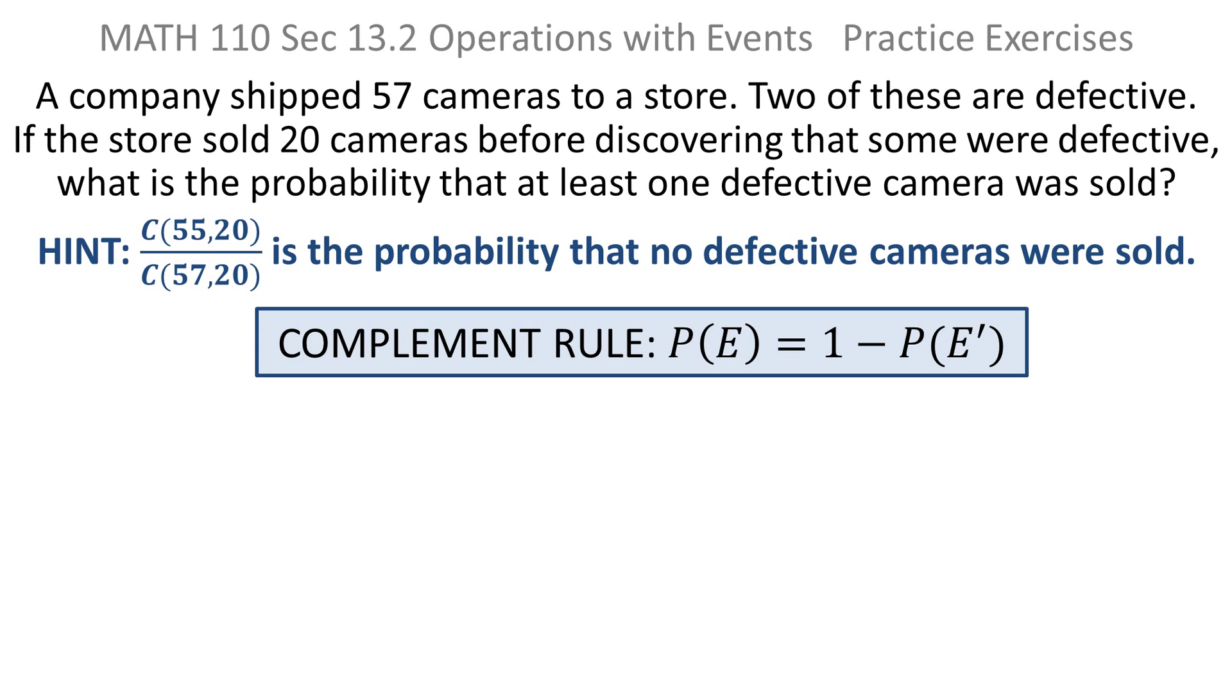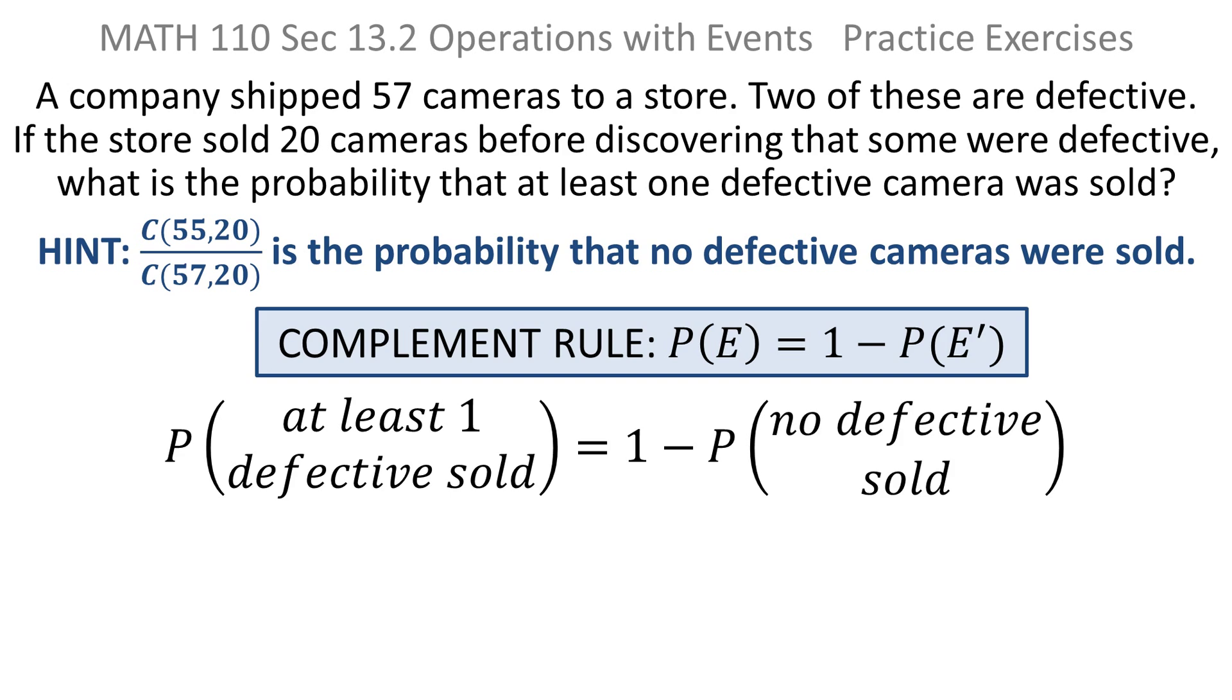So they're asking us the probability of at least one defective, and I want to think of that as one minus the probability that there are no defectives. Because at least one defective, if you've got 20 cameras, that's a lot of possibilities. But if I think of it as a complement, it's simply the complement of getting zero defective sold. And that's much easier to do.